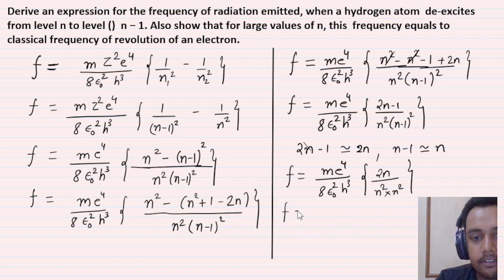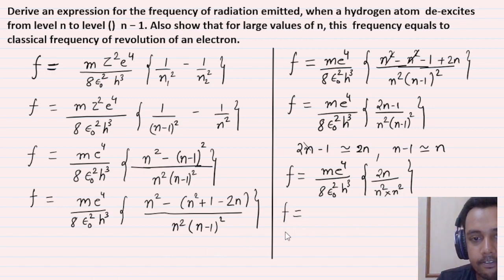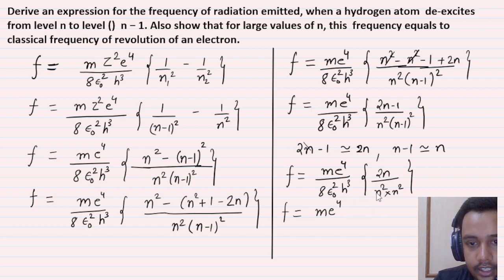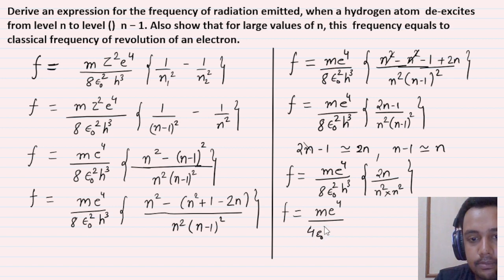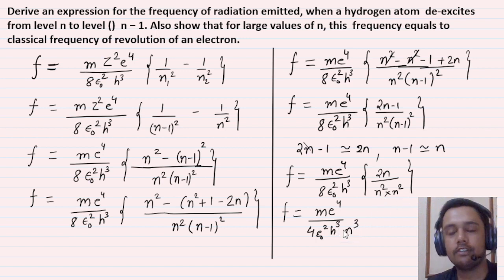So your formula becomes: f = me⁴ / (8ε₀²h³) × 2N / [N² × N²]. The 2 in numerator cancels with 4 in denominator giving: f = me⁴ / (4ε₀²h³N³). This is the frequency formula for large N.